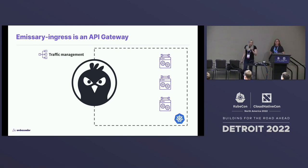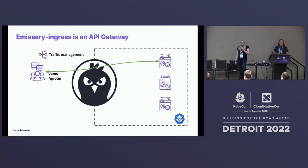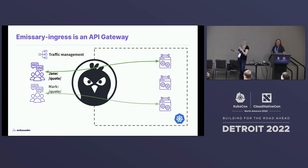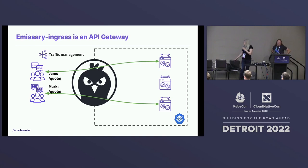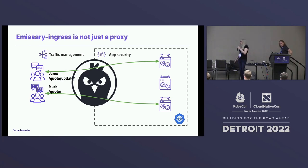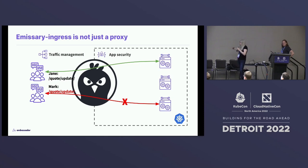Emissary is an API gateway, but it is not just a proxy. Emissary Ingress also does authentication as well as lots of other cool control patterns for traffic. Let's say we've got two users — Jane and Mark — and they both want to access the service. You can inspect things beyond just the path, things like the HTTP header, and say Jane goes to this service and Mark goes to this other service. We also support extensions for authentication. So if Jane wants to update something on the application and Mark does too, we'll talk to that extension for authentication first — Jane is allowed to perform that update, but Mark gets banished to the shadow realm.